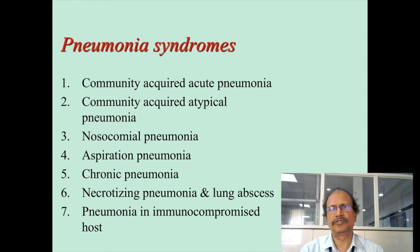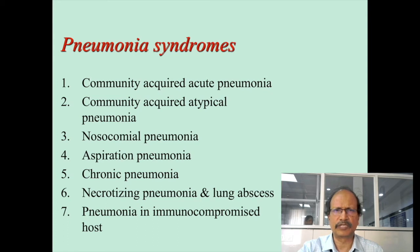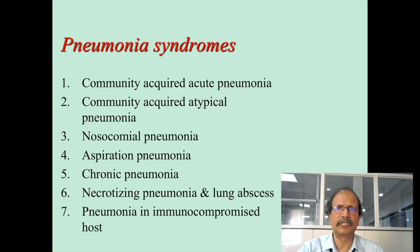There are some syndromes connected with pneumonia that you should know: community acquired pneumonia, community acquired atypical pneumonia, nosocomial pneumonia, aspiration pneumonia, chronic pneumonia, and necrotizing pneumonia. These are all important entities specifically associated with certain pathogeneses, and identifying them will narrow down your differentials.